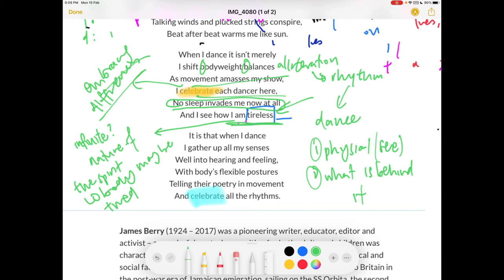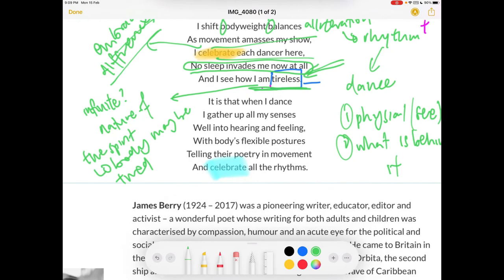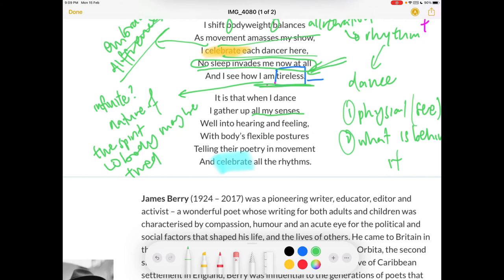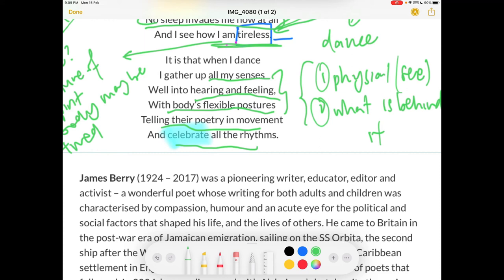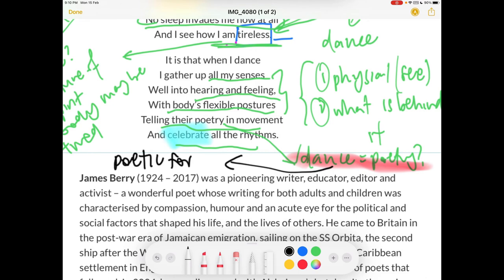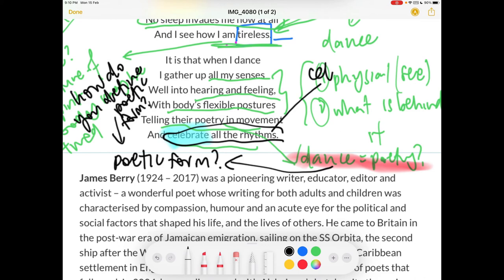It is that when I dance, I gather up all my senses, well into hearing and feeling, with body's flexible postures, telling their poetry and movement and celebrate all the rhythms. Here again, talking about the physical and what is behind it. And the last two lines about their poetry and movement and celebrating all the rhythms. How is dance like poetry? I won't answer this for you. You can think about it. How is dance like poetry? And how is dance a poetic form? And how do you define poetic form? Celebrating all the rhythms, celebrating all poetry.